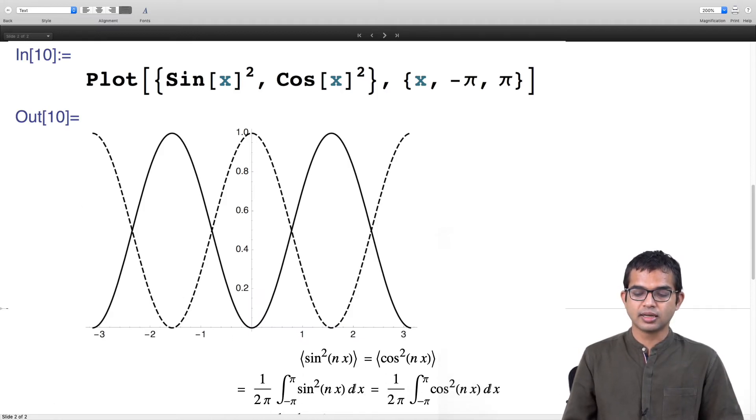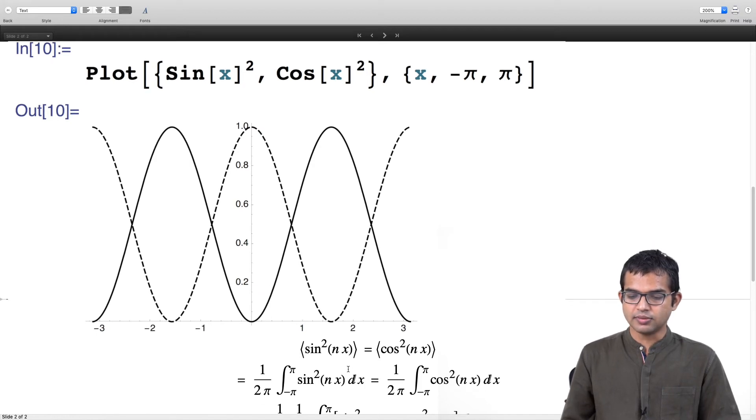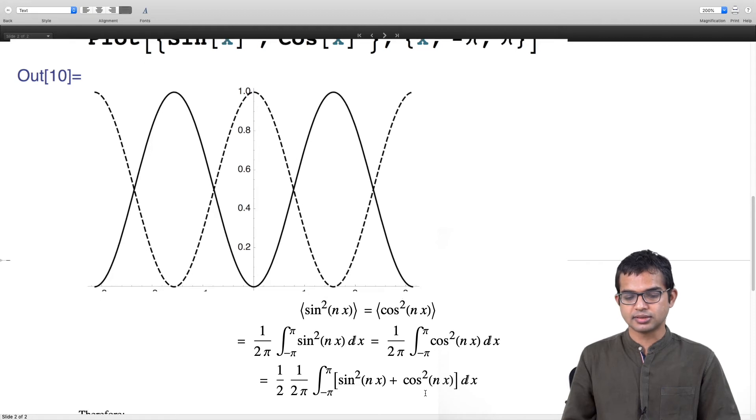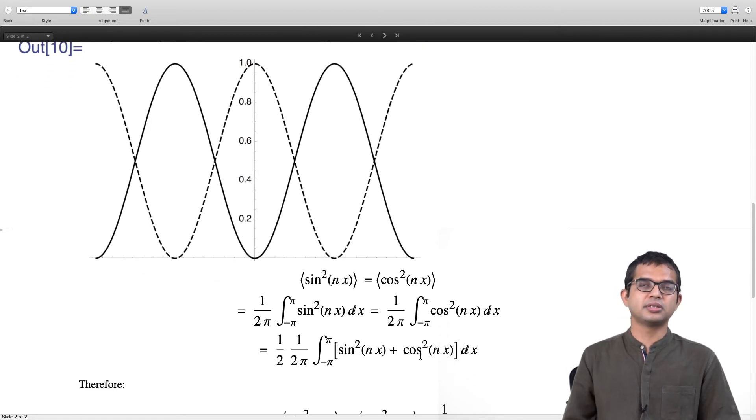For the purpose of this discussion, let us say that you are looking at the average of sin²(nx) and cos²(nx) in the interval from -π to π. If I do this, then since this quantity is equal to this quantity, I can just add the two and then divide by 2. So it is half of 1 over 2π times the integral from -π to +π of sin²(nx) + cos²(nx) dx.